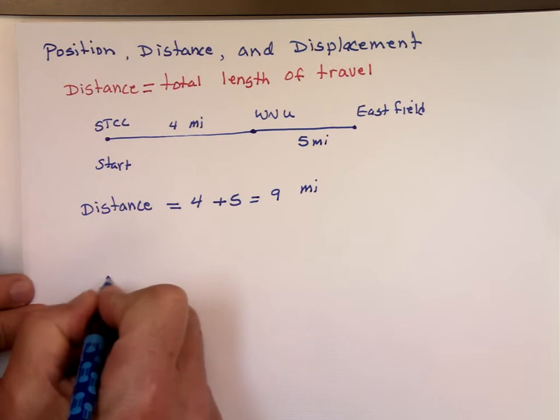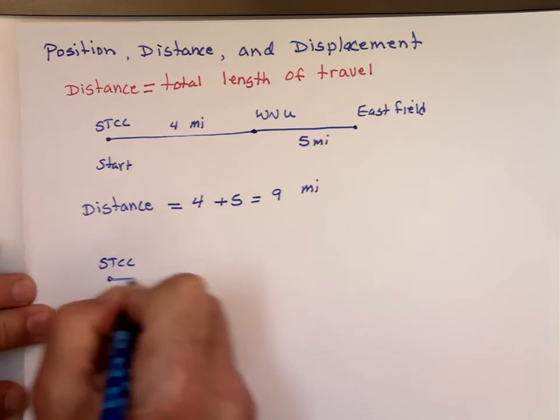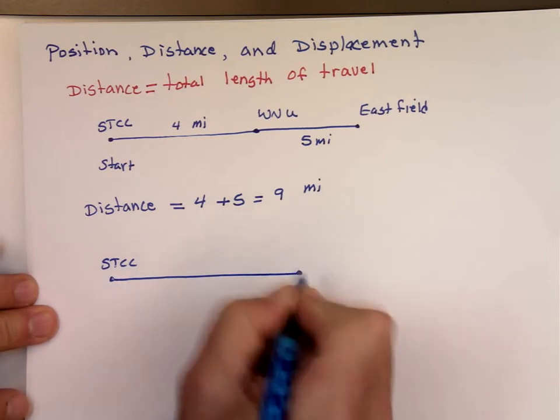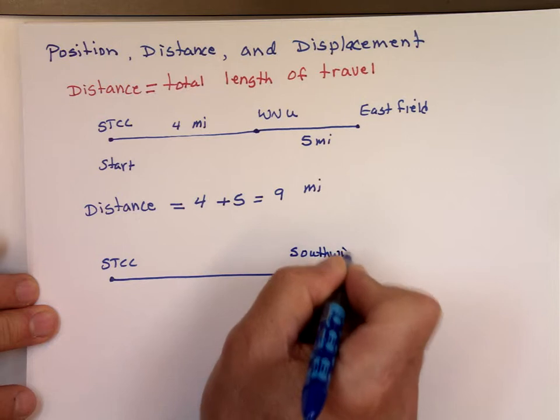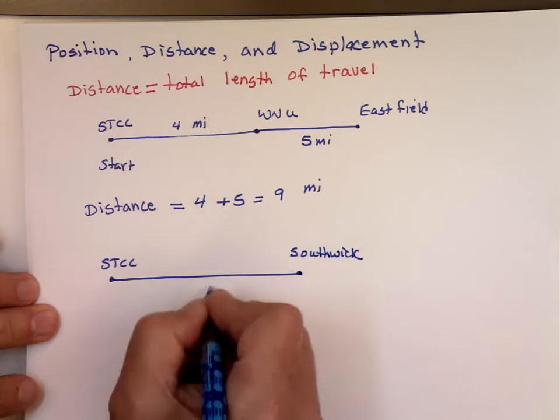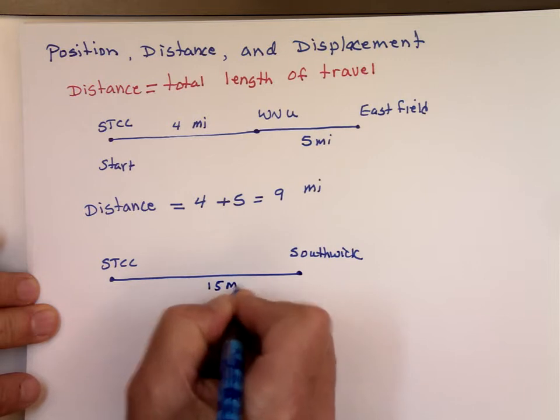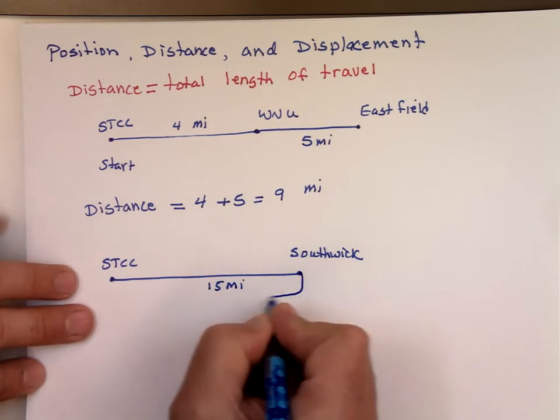Or, if you start from STCC and you travel all the way to Southwick, Mass. Southwick is probably about 15 miles from here. Once you get to Southwick, you did whatever you had to do, then you traveled back to Agawam.